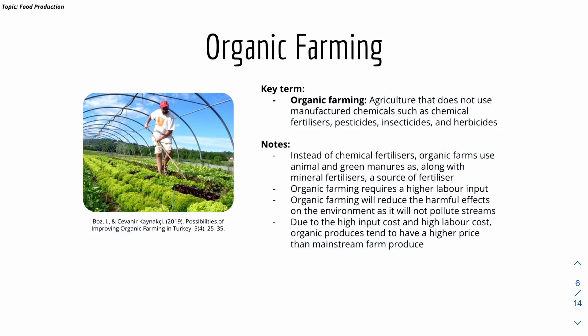In organic farming, instead of synthetic chemicals, farms use animal and green materials along with mineral fertilizers. Organic farming requires high labor input because organic materials need human labor to spread across the area. While it reduces harmful environmental effects, the high input and labor costs mean organic produce tends to have a higher price than mainstream farm produce.